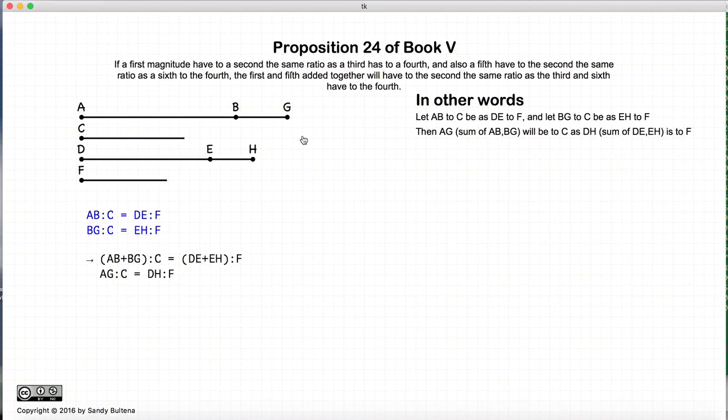We start with some ratios such that AB to C is equal to the line segment DE to F, and BG to C is equal to EH to F. So this is our starting condition, and this proposition states that if this is true, then the sum of the two AB and BG, or in other words, AG to C will be equal to the ratio of DH to F.